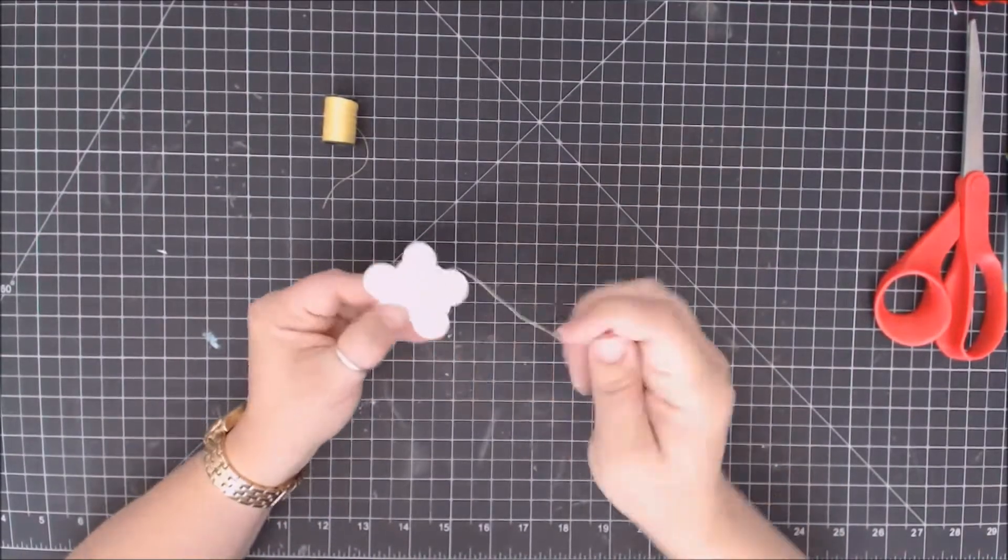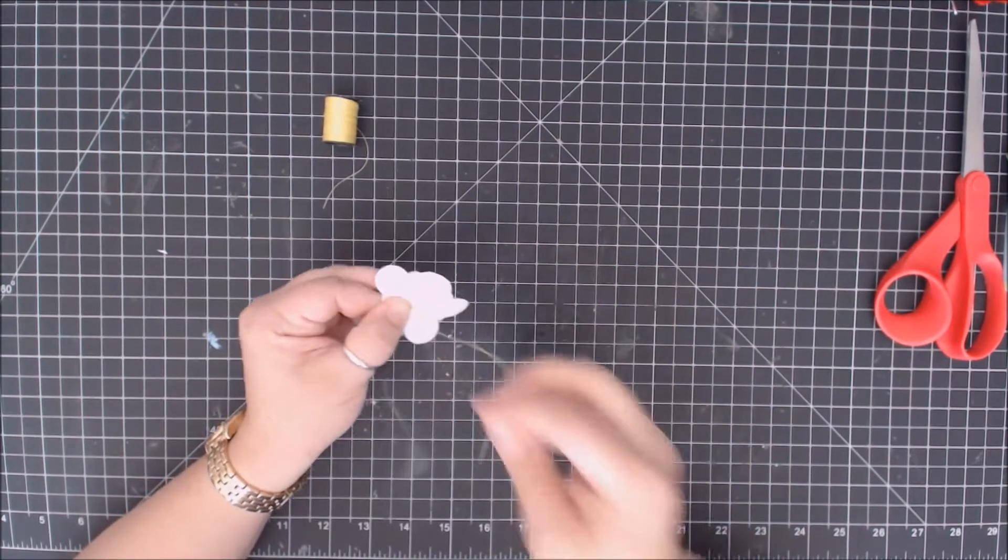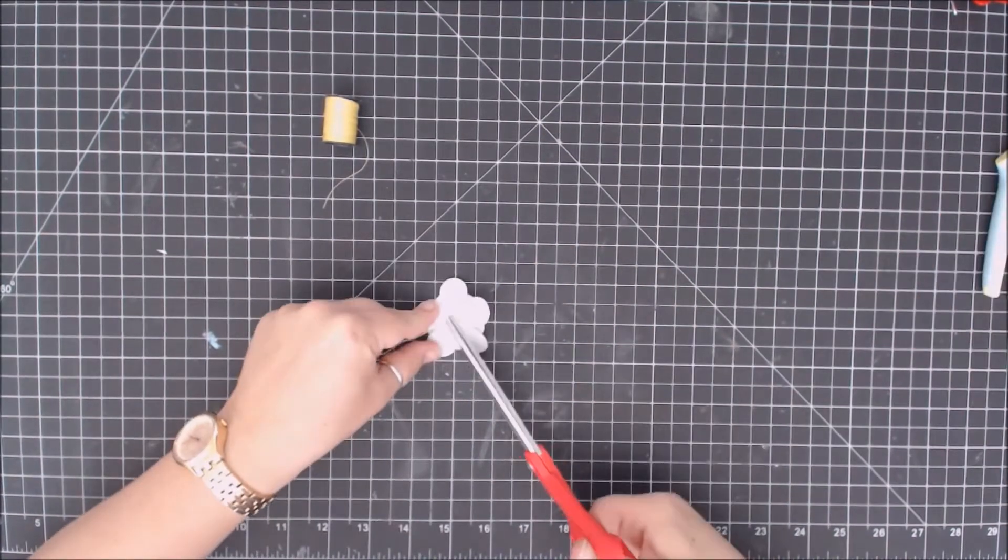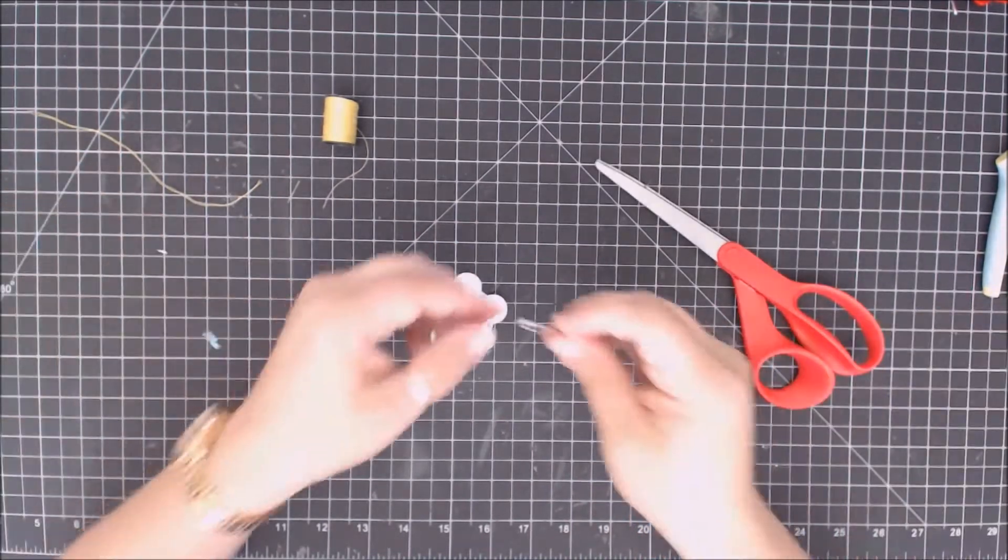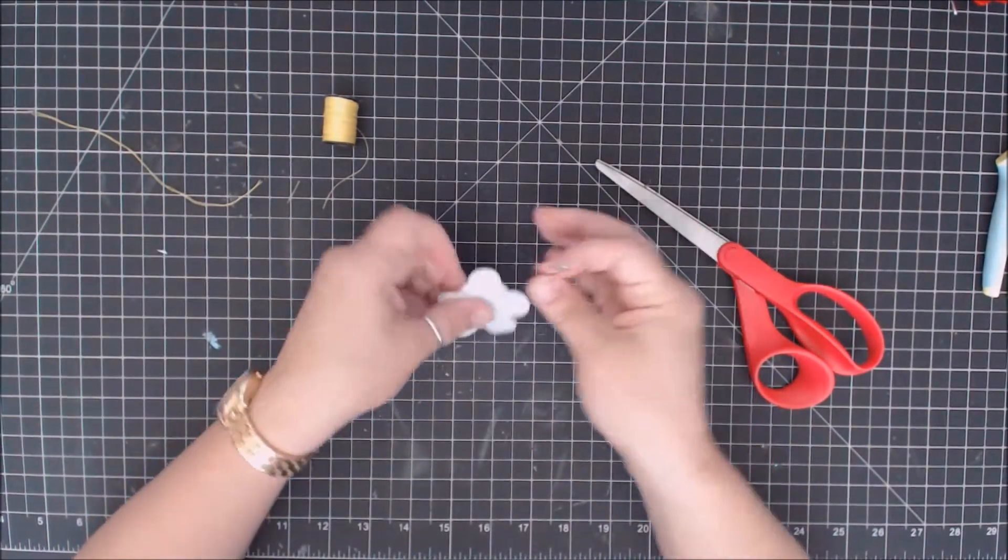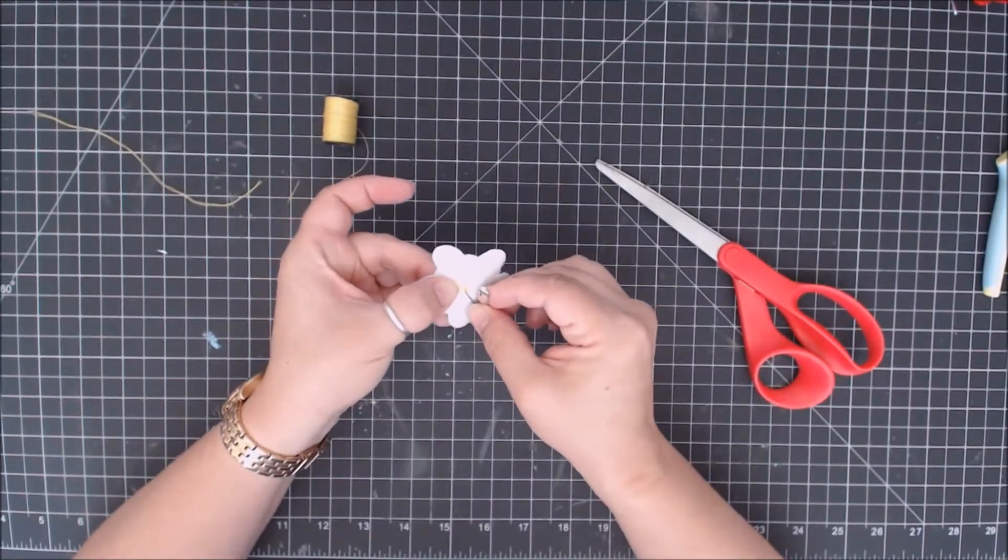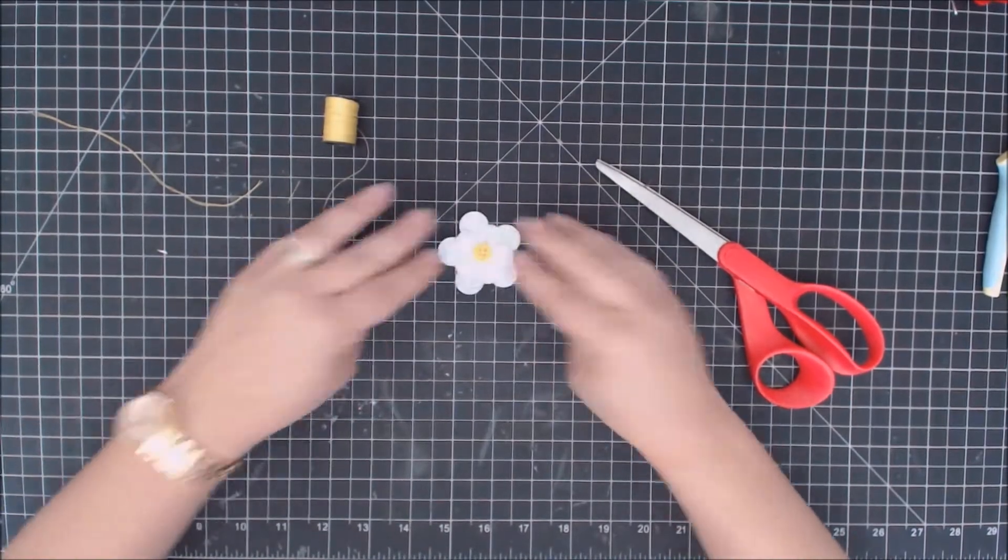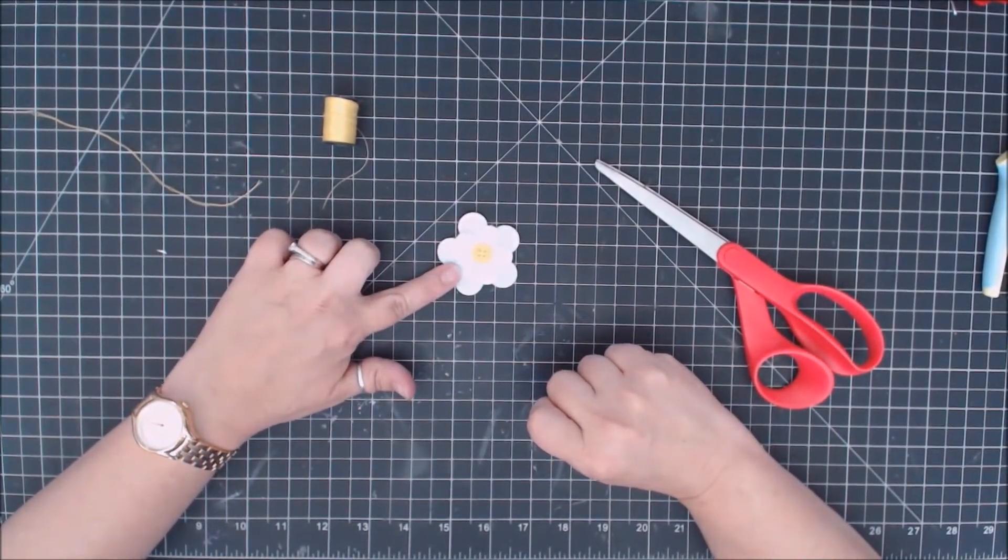Once your button's been sewed on, tie it off in the back. Knot it up. Any excess you have, and then your little clip actually can go right through where you just sewed all of your threads, and therefore your swap will actually look like it is a little daisy sitting on the front of your uniform when you swap it.